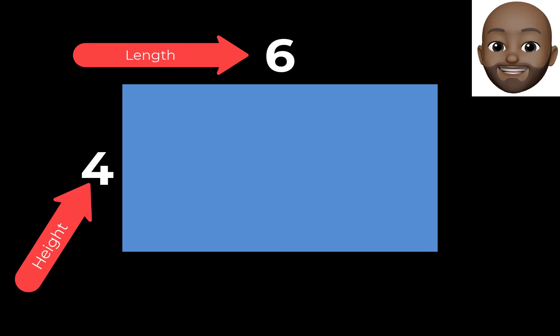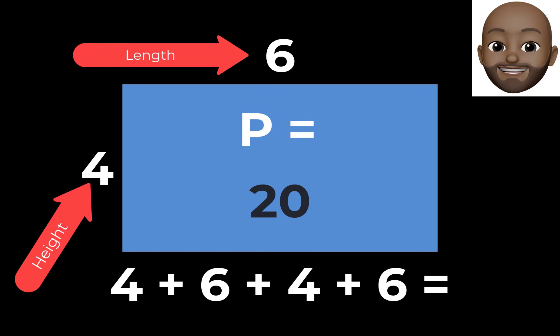To find the perimeter of a rectangle, simply add all of the sides. For example, this rectangle has a length of 6 and a height of 4. To find the perimeter, simply add all the sides and the answer will be 20.